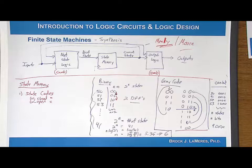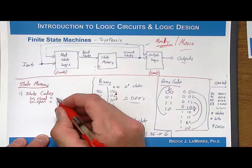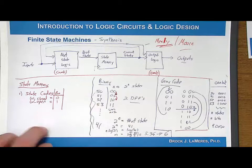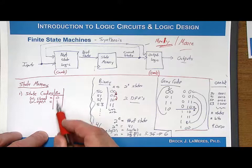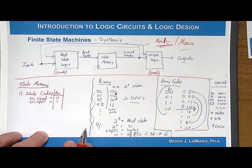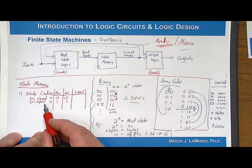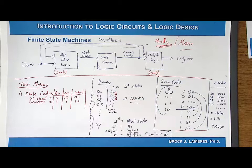Coming back to our original simple example: what would the encoding look like in binary? There's really only one way — just start and do a binary count: zero, one. That's it. Gray code for this two-state example is the same: zero, one. One hot would actually be different — with two states you'd go 01 and 10. It's arbitrary; you can pick any code you want. For our example, let's just choose the simple binary encoding: closed equals zero, open equals one. We've done our state encoding and we're done.